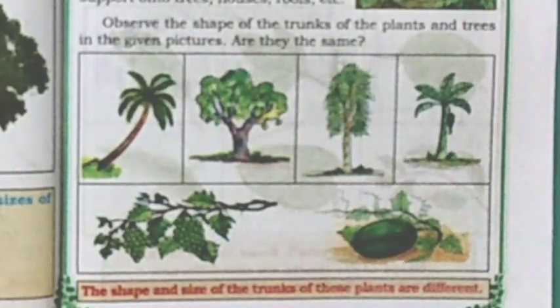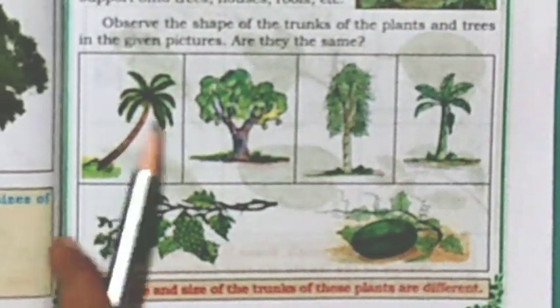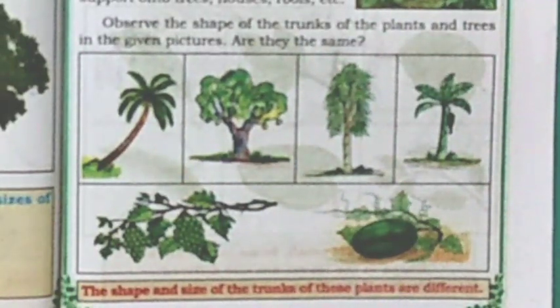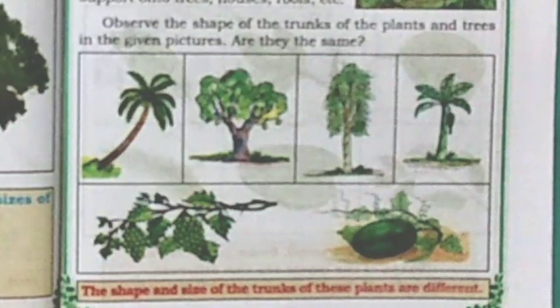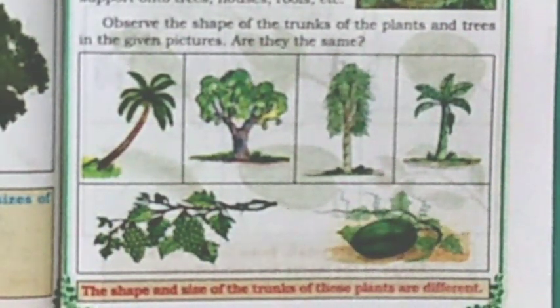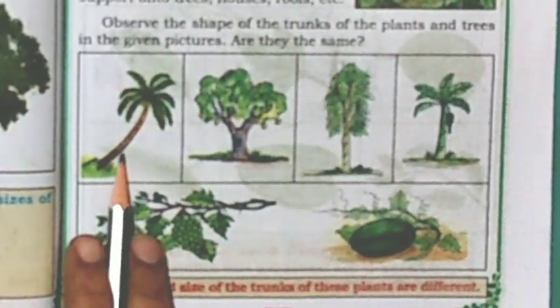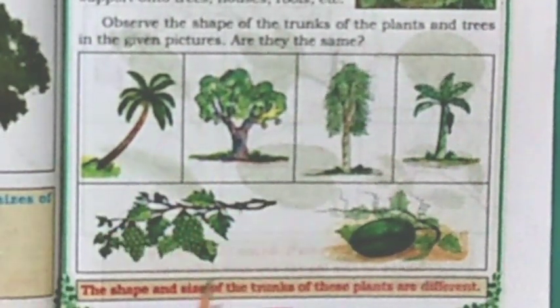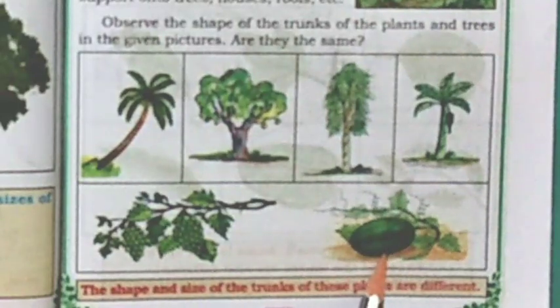Observe the shape of the trunks of the plants and trees in the given picture. Are they the same? No. The shape and size of the trunks of these plants are different. Coconut tree and mango tree — these are trees. Grapevine and pumpkin — these are creepers.